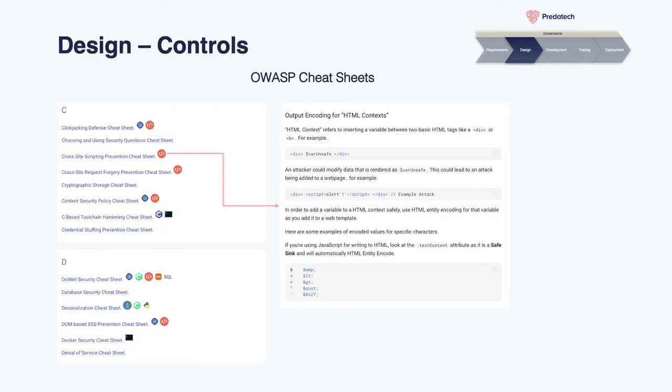When you come to implementing controls and aren't sure how to prevent or mitigate a certain threat, definitely take a look at the OWASP Cheat Sheets. They are great resources where you can find more information on prevention for certain types of attacks, as well as topics such as threat modeling and other security areas. The link will be in the description.